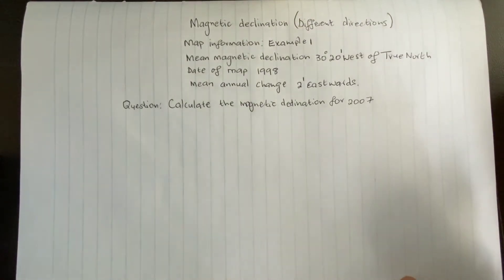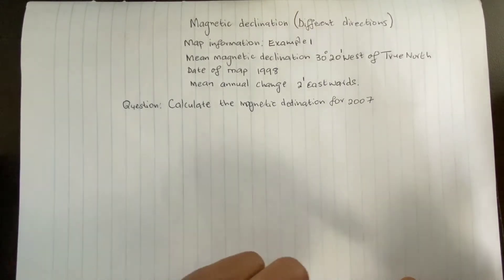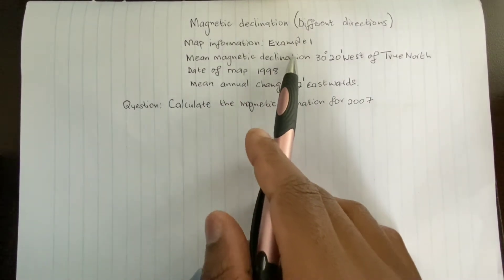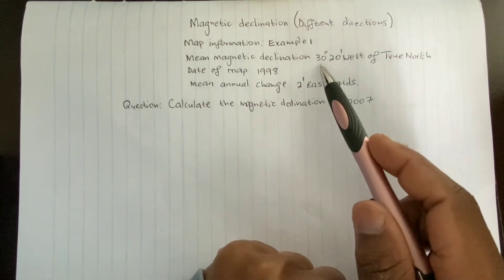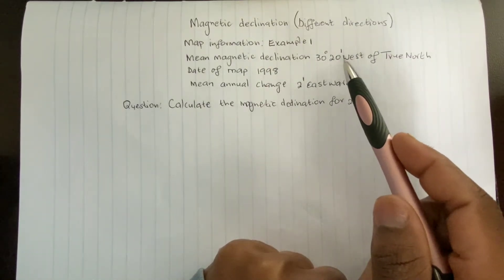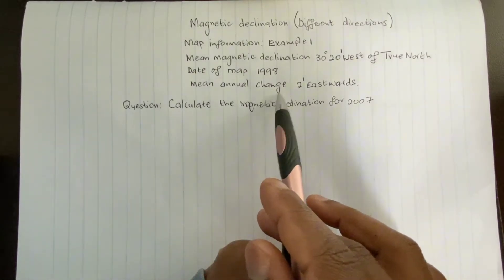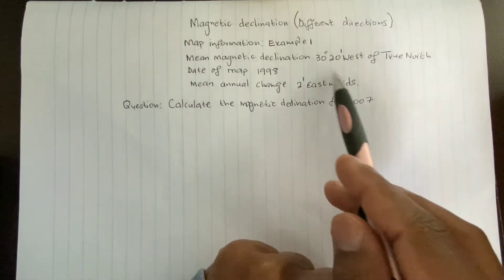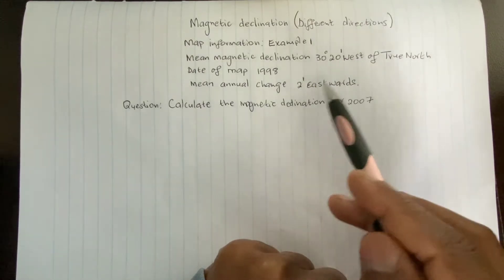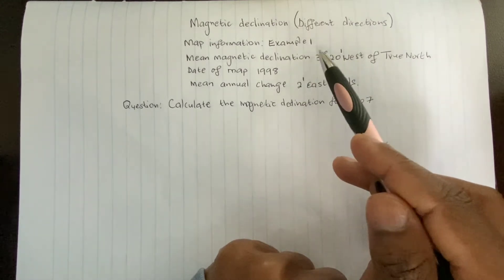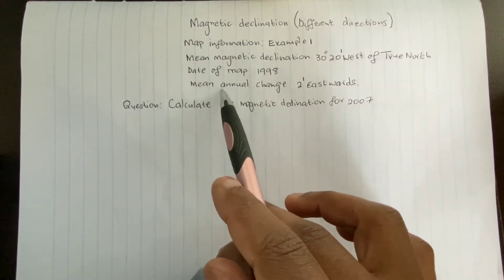Many of you have been asking me to do an example of magnetic declination when you have different directions. In this case, the mean magnetic declination is 30 degrees 20 minutes west of true north, and the mean annual change is 2 minutes eastwards. So I have two different directions: west for the mean magnetic declination, and east for the mean annual change.